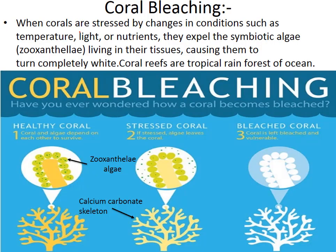Corals are skeletons made of calcium carbonate on which zooxanthellae algae reside. When water temperature increases, corals get stressed and expel the symbiotic zooxanthellae algae living in their tissue, causing them to turn completely white. This process is called coral bleaching.